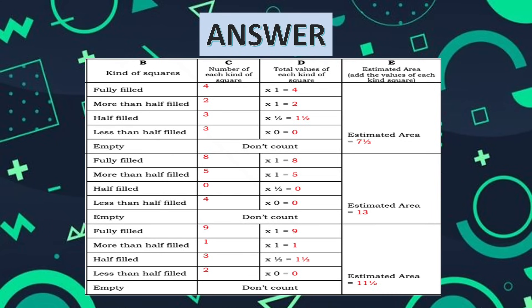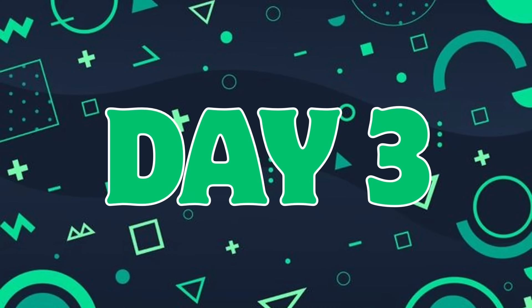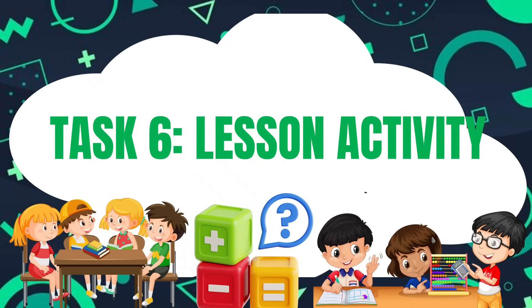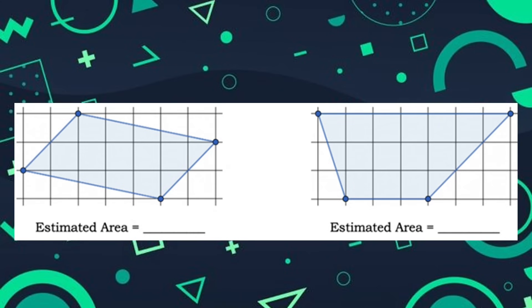The same method will be done for the trapezoid and parallelogram. If you get confused, go back to the previous slides to check the conversion values. Make a table so you don't get confused — count how many are fully filled, half filled, less than half filled — then multiply and add up to get the estimated area.